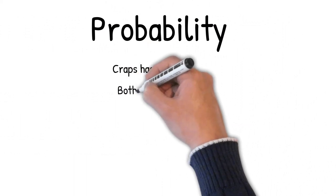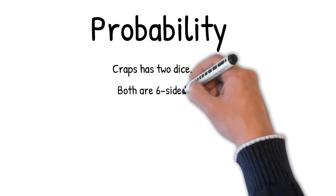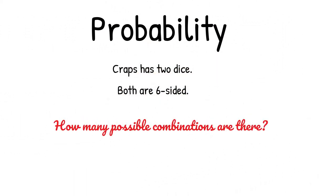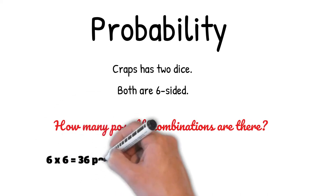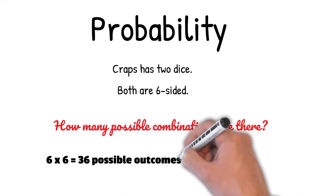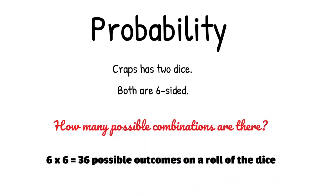Craps has two dice. Both are six-sided. How many possible combinations are there? Six times six equals 36 possible outcomes on a roll of the dice.